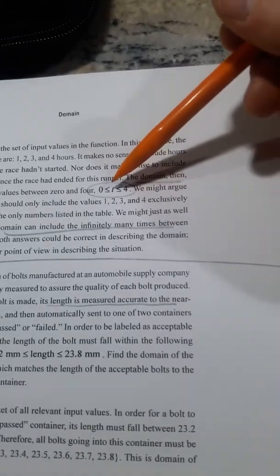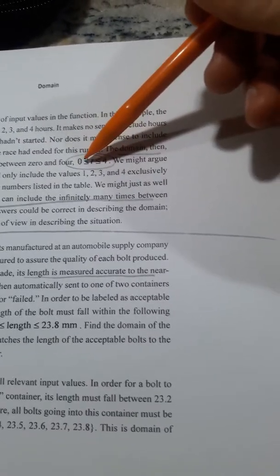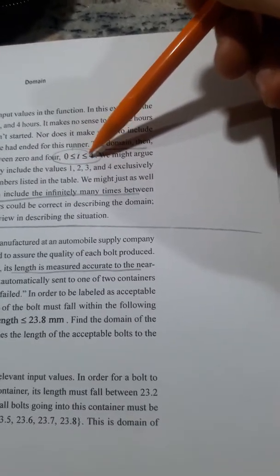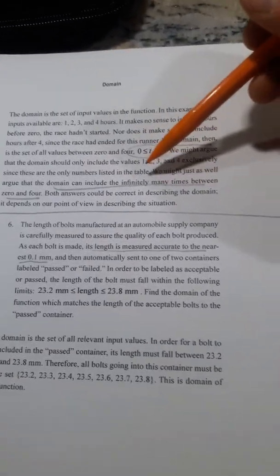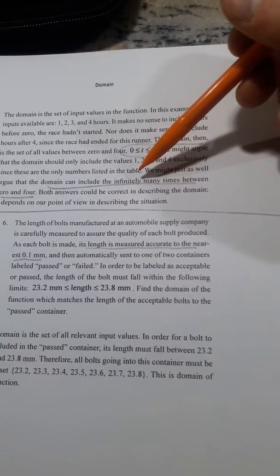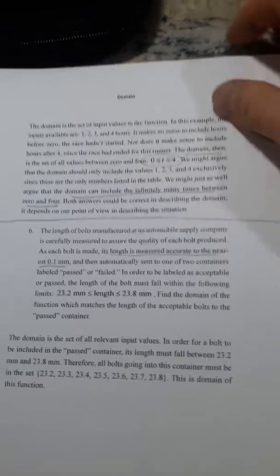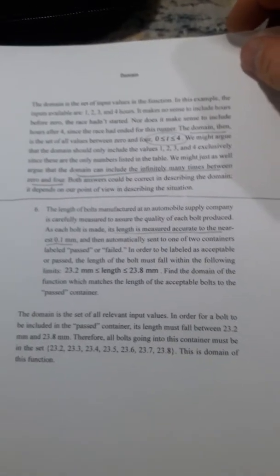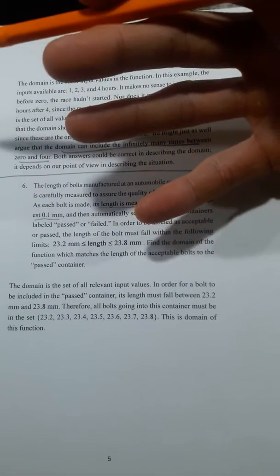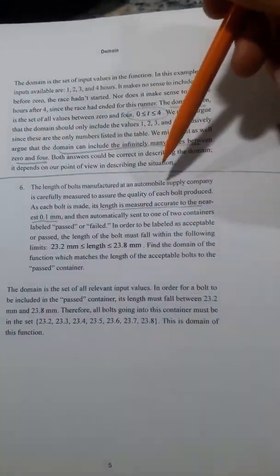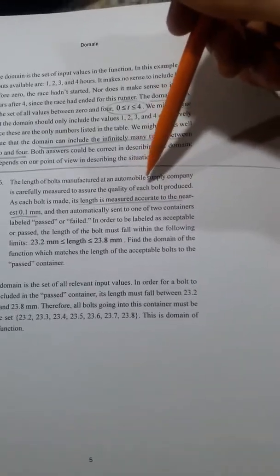So our domain is anything that's greater than or equal to 0 and less than or equal to 4. You could say it in another word that the domain can include infinitely many times between 0 and 4. It could be 1.1 hours. It could be anything in there, because that makes sense. It doesn't have to be whole numbers for time.